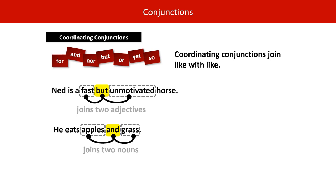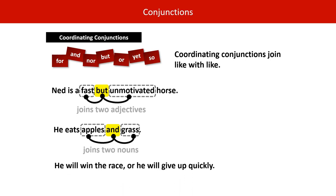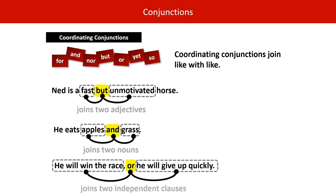In the first example it's two adjectives; in the second it's two nouns. 'He will win the race, or he will give up quickly.' Or is our coordinating conjunction joining two independent clauses. Notice there is a comma before the or, because that's what you do when a coordinating conjunction joins two independent clauses. The key point is that it's like with like.